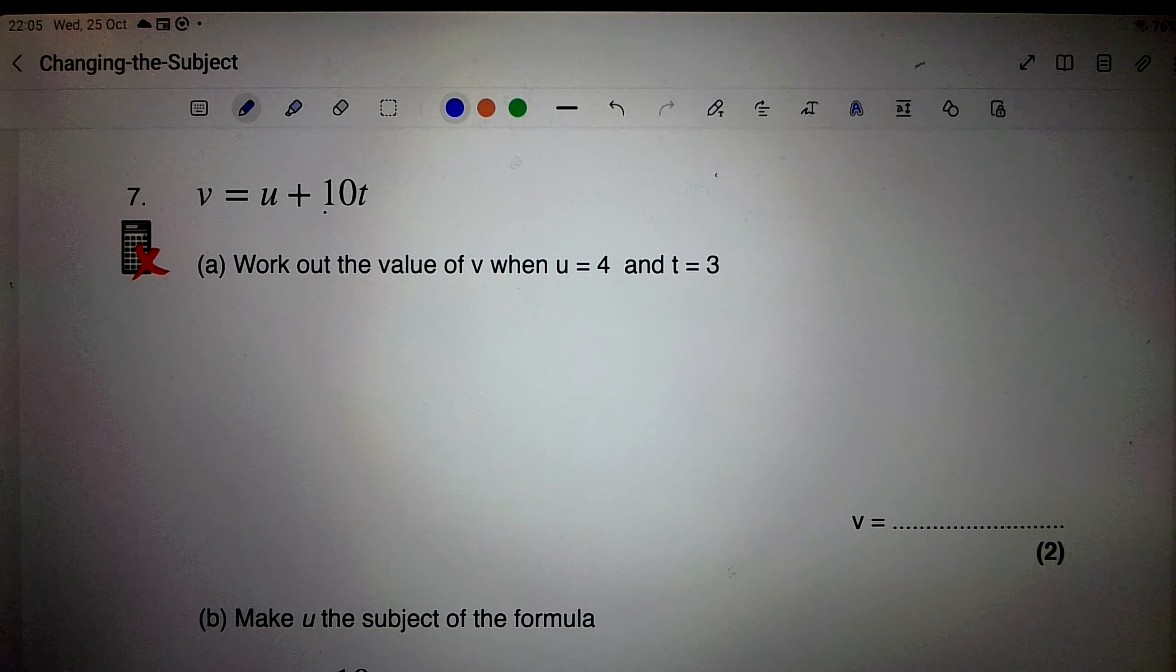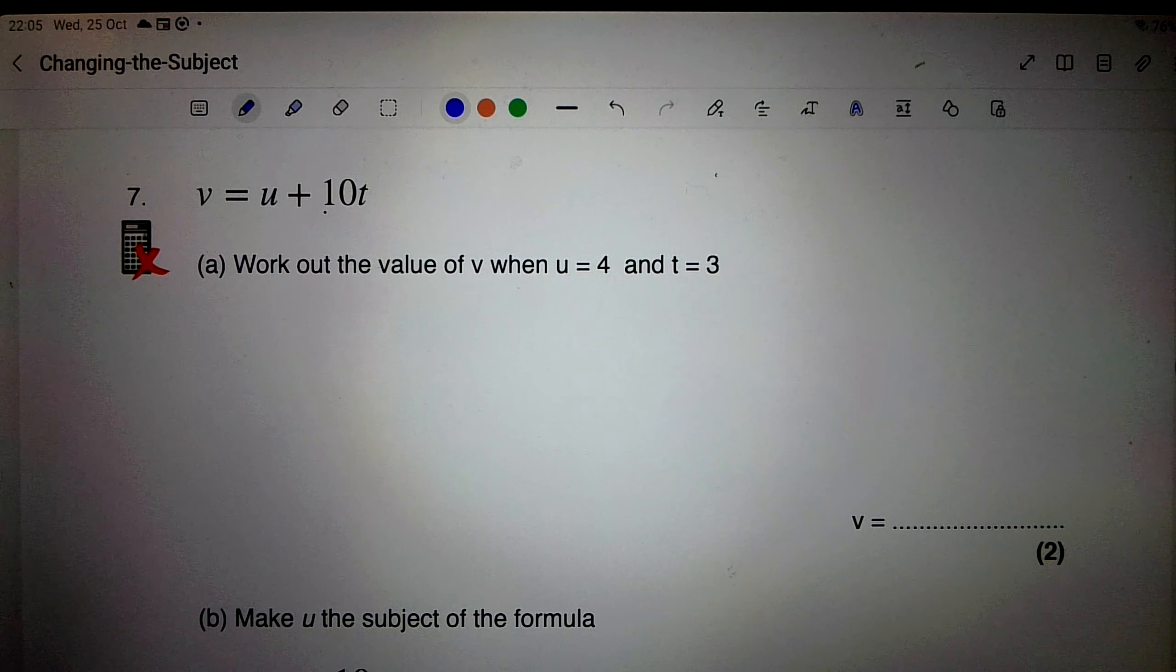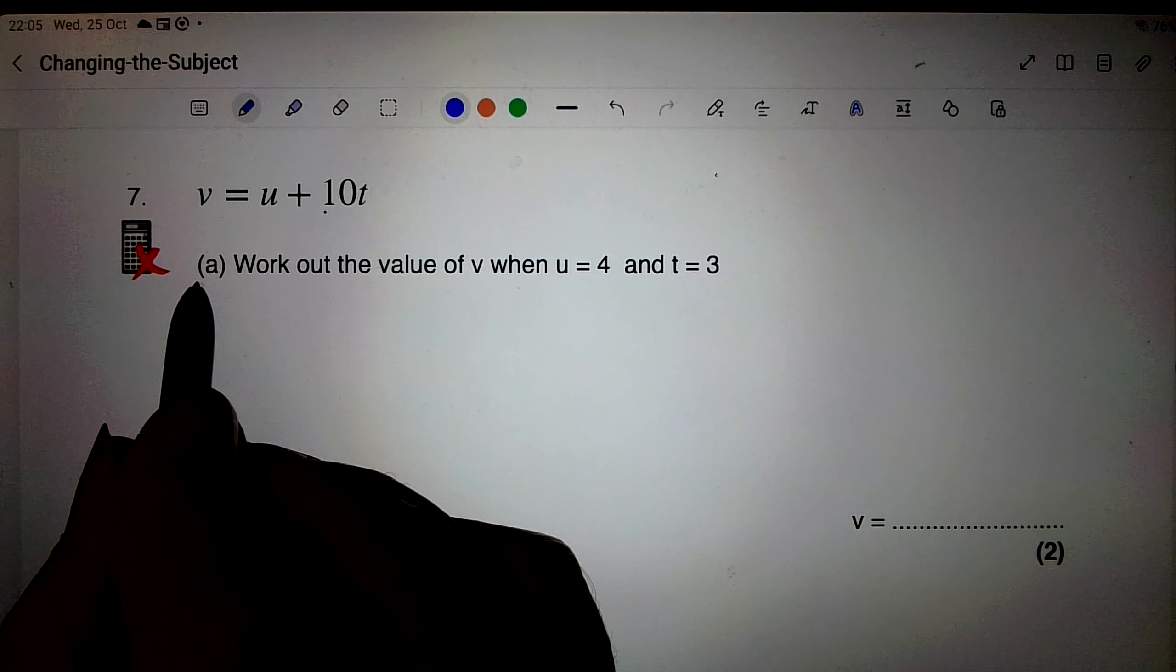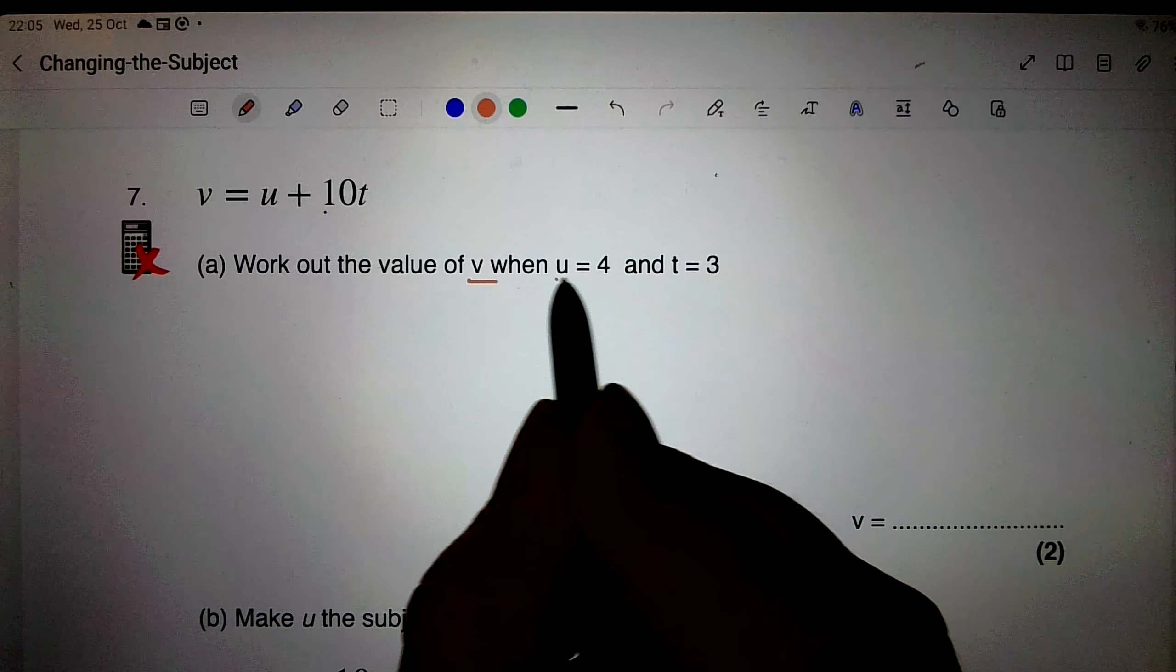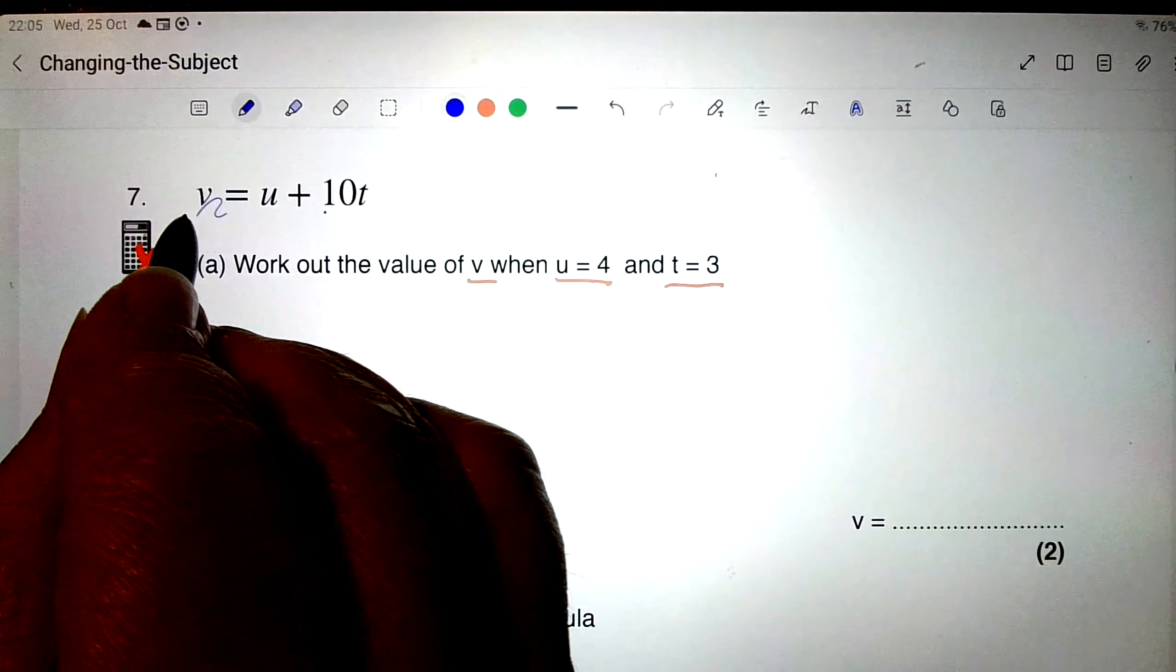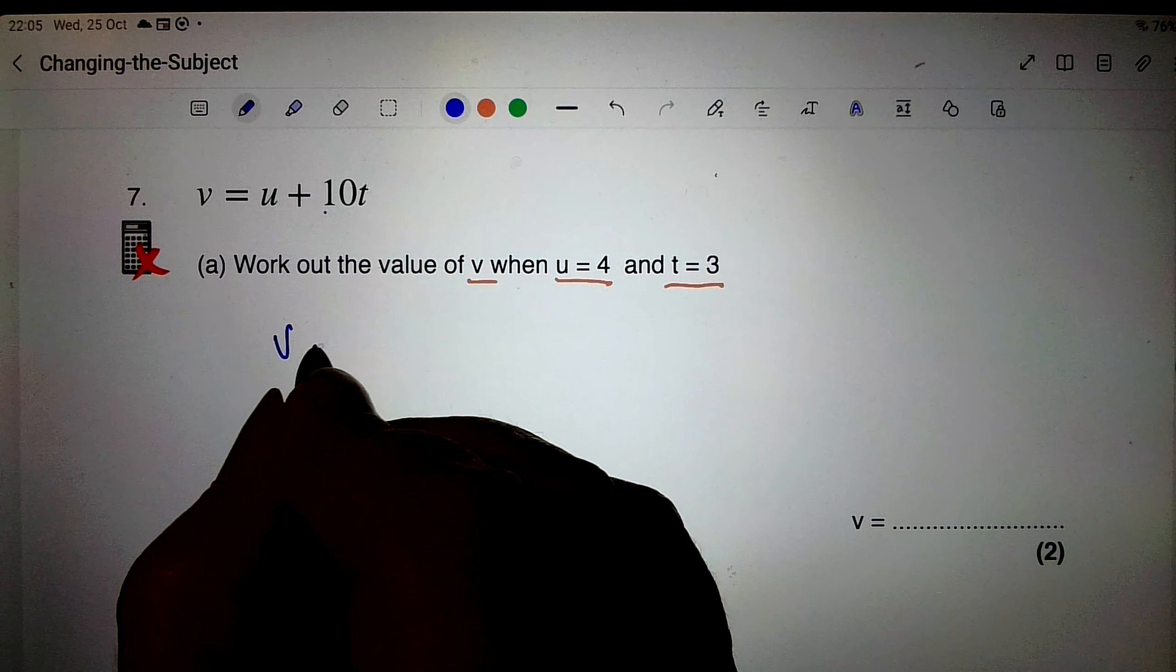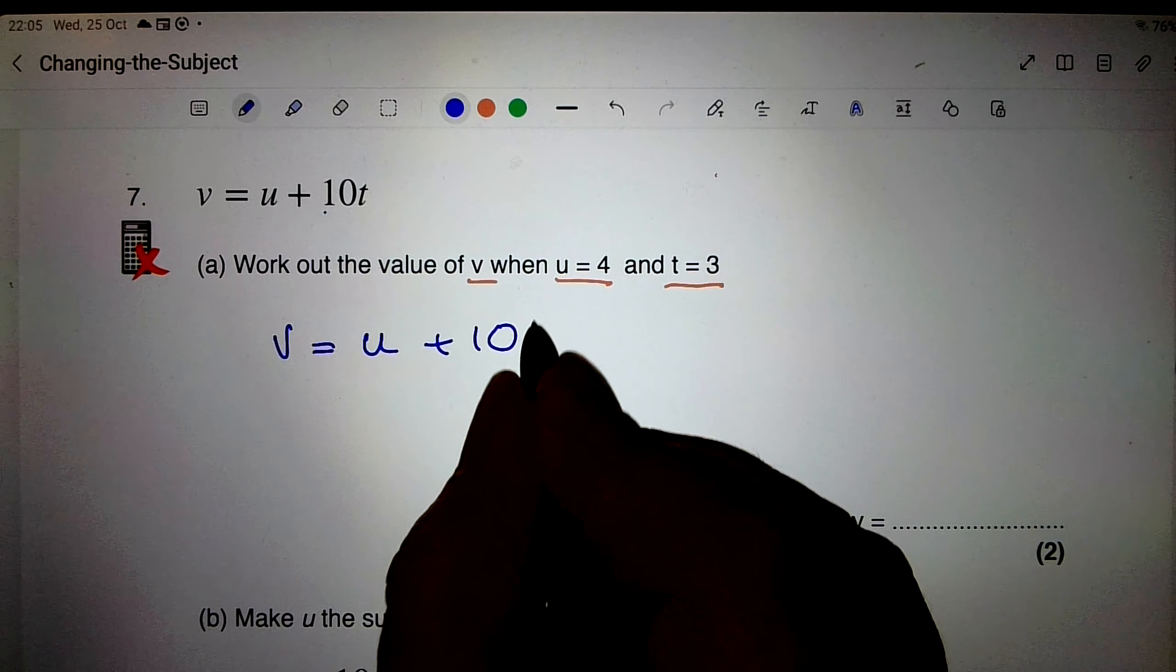Right, now the next question seven is much more like a proper GCSE question. There's part a, part b, and below that part c. So it says part a, work out the value of v when u equals 4 and t equals 3. Well, this is the way that I like to do it. I'm going to write the formula out again, v equals u plus 10t.